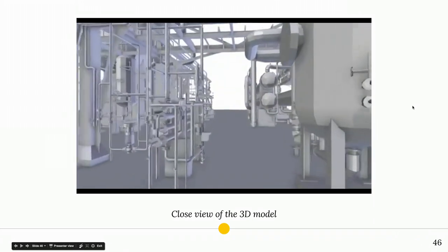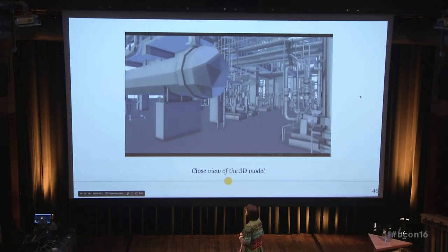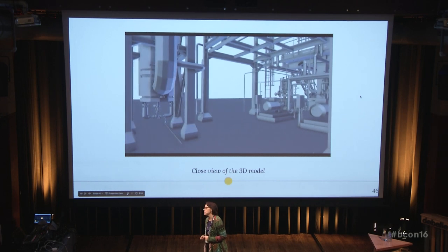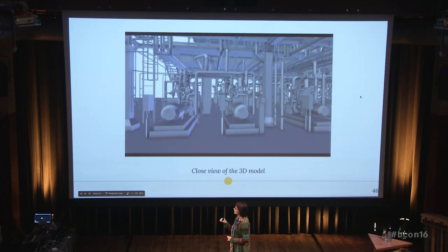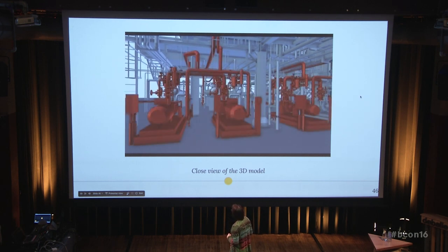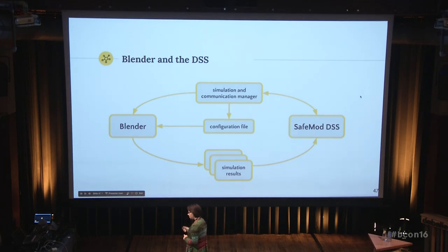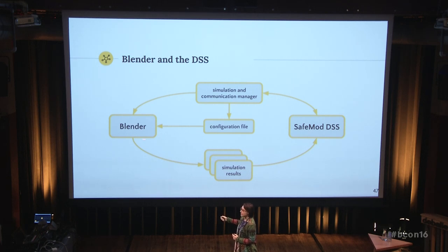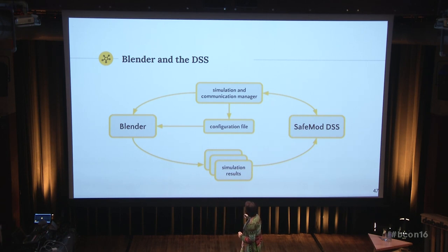This is a quick tour inside the model of the refinery at ground level. This is a very detailed model — it has more than 2.7 million polygons. At the end of this quick tour, you will see an area highlighted in red. This area has been chosen as our testing area because of its critical level of risk of fire. Blender is integrated inside a decision support system. The communication between the two elements starts when the SafeMode DSS sets up a simulation scenario, which is directly communicated to the Blender engine, which then starts the simulation. At the end of the simulation, the results are produced and sent back to the decision support system for further analysis.